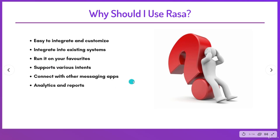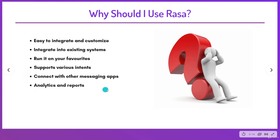The fifth point is that Rasa connects with other messaging apps. For example, if you have a team answering customer queries on a channel like Facebook, Slack, or other custom channels, and you need to launch a new AI chatbot on a new channel, this could disrupt customers already used to sending queries on their existing channel. To avoid this, Rasa allows you to create a system that connects with customers on multiple messaging channels like Facebook, Google Home, Slack, and others.